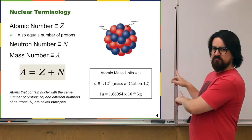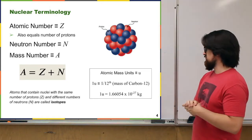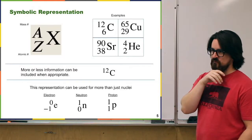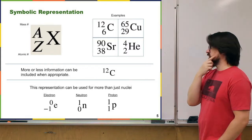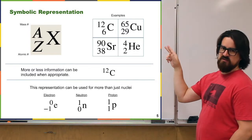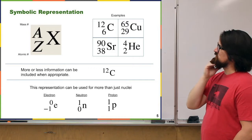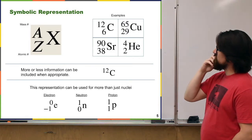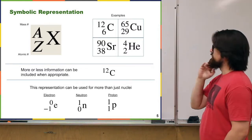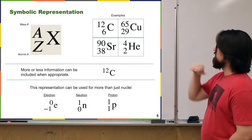If you're wondering why one u is not just the mass of one proton, well, that's a big part of nuclear physics — the masses of these nucleons are not necessarily always the same. When we want to refer to nuclei, we use a symbolic representation: X is the element, A is the mass number written up top, and Z is the atomic number. Really Z and X are telling you the same thing, but you put the element name, the atomic number, and the mass number.